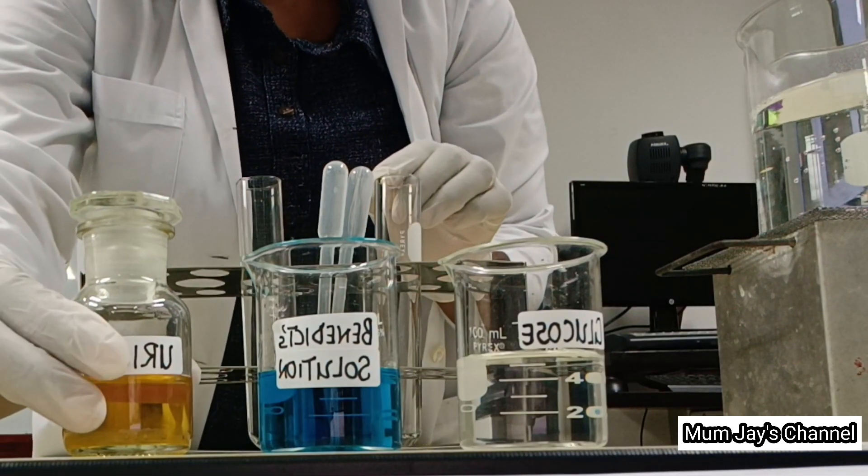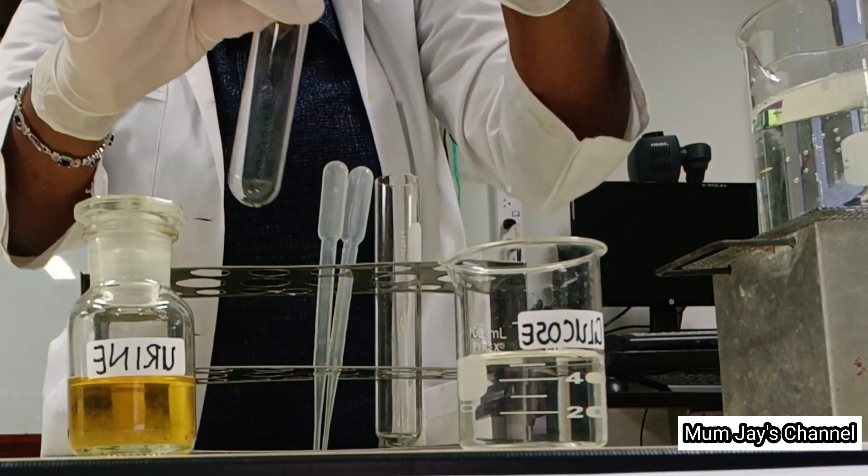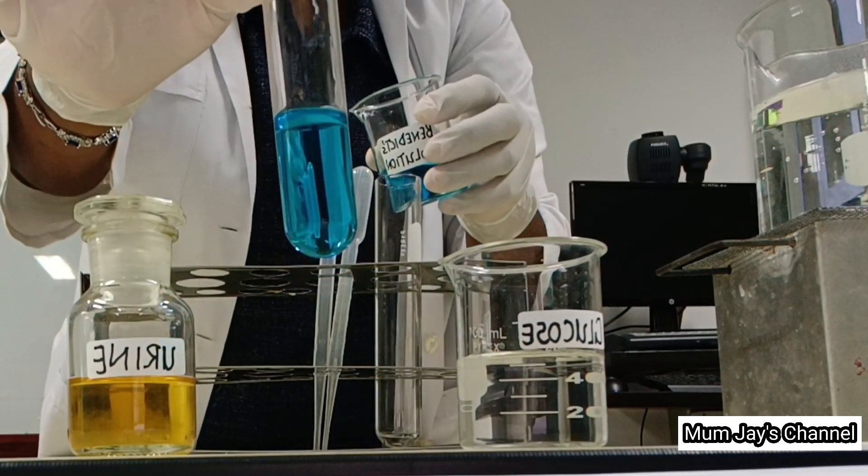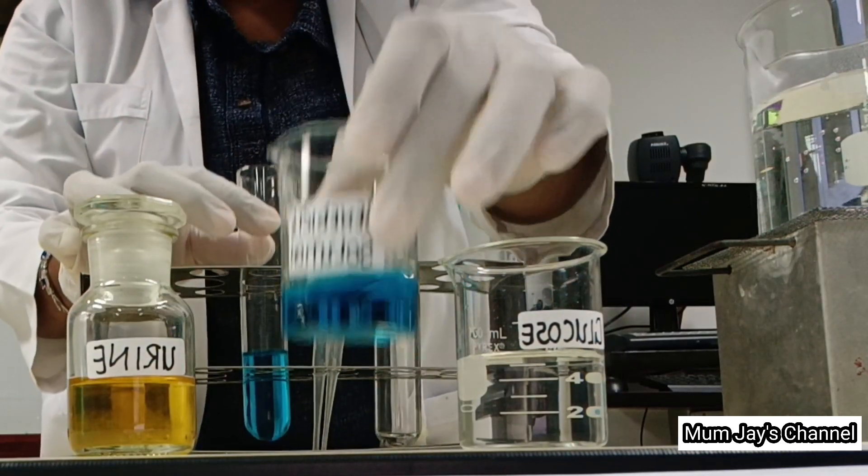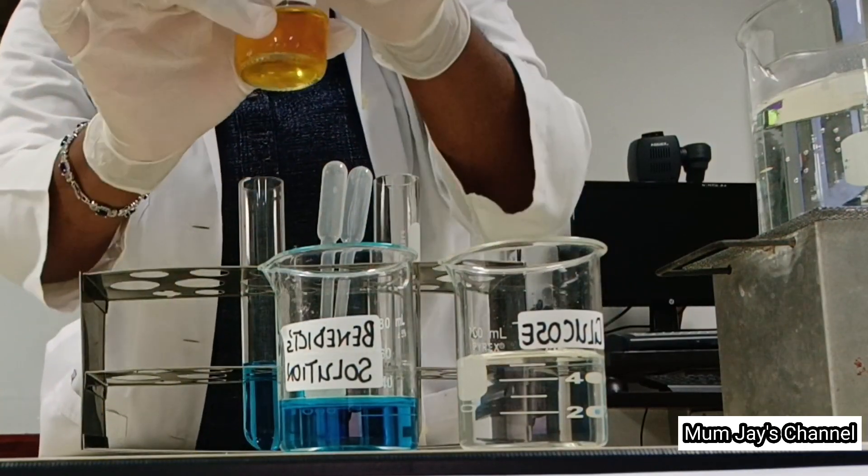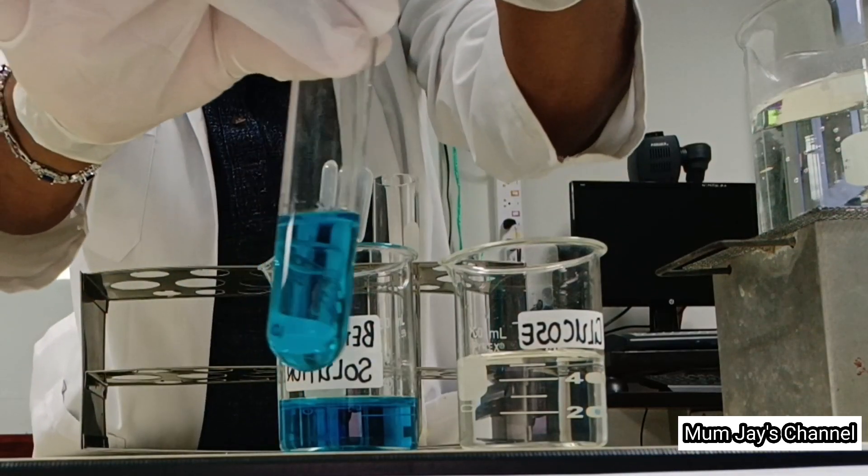First we will measure out two milliliters of our Benedict's solution and put it in the boiling tube, and then we add one milliliter of our freshly obtained urine.